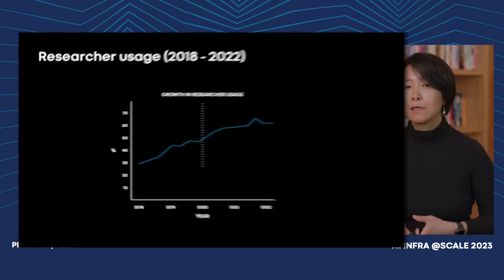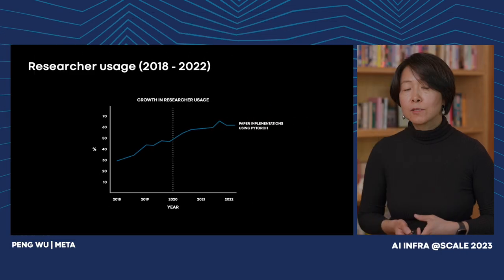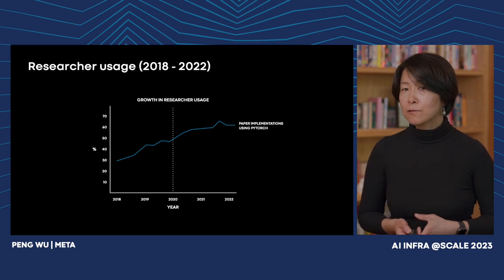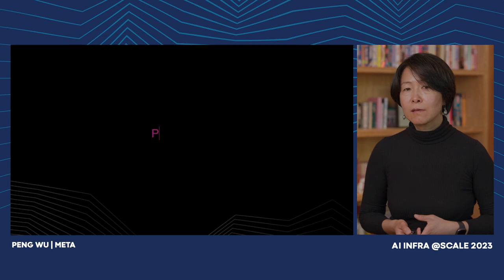This bet paid off. Two and a half years after the 1.0 release, PyTorch reached 50% adoption, making it the number one machine learning framework used by researchers. After that period, we still see healthy year-to-year growth to date. Today, PyTorch is the de facto training engine for most of the most advanced ML models out there.